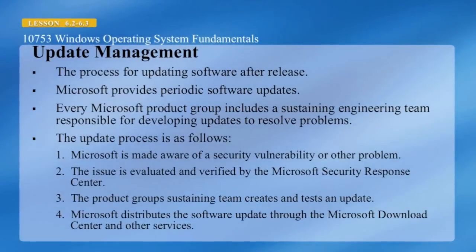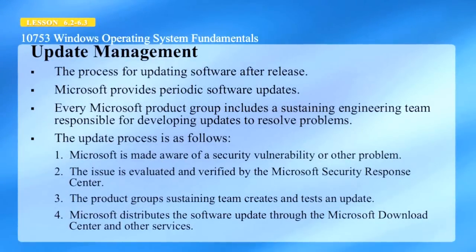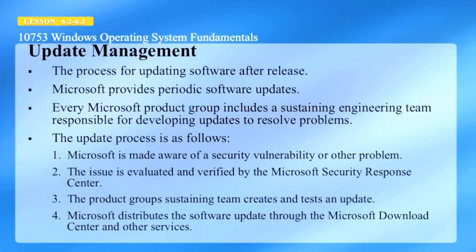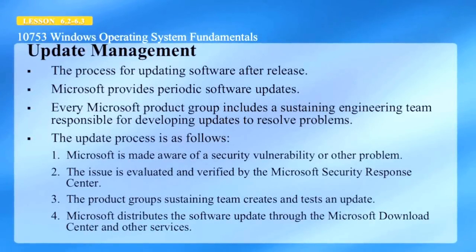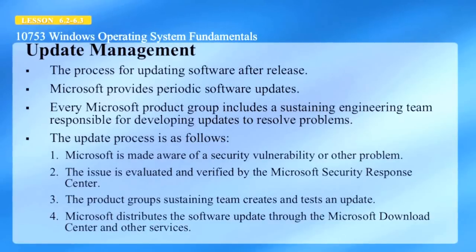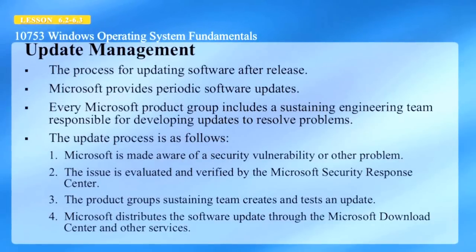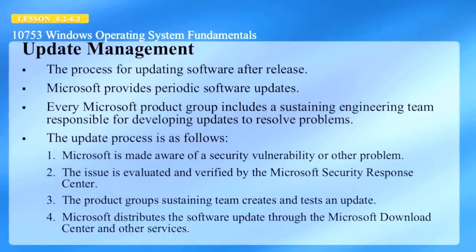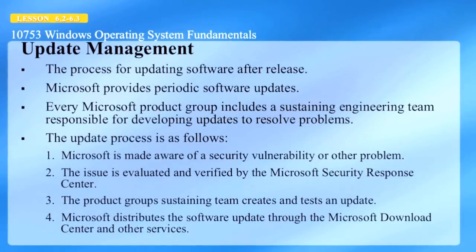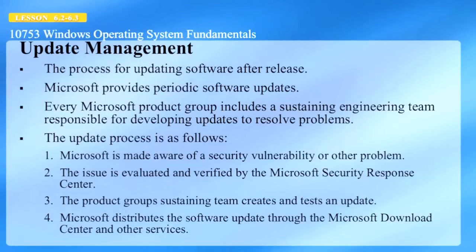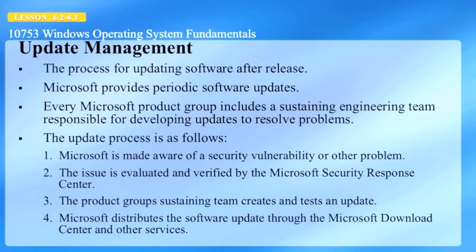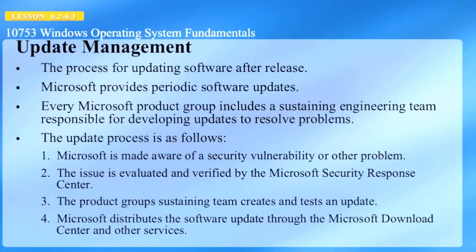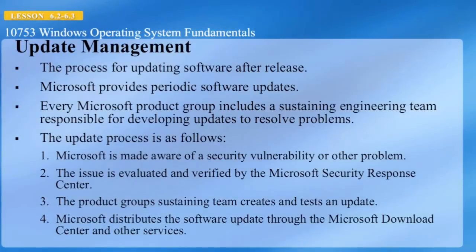Update management is the process for updating software after release, also known as patch management. Microsoft provides periodic software updates, and every Microsoft product group includes a sustaining engineering team responsible for developing updates to resolve problems. The update process is as follows: Microsoft is made aware of a security vulnerability or other problem, the issue is evaluated and verified by the Microsoft Security Response Center, the product group's sustaining team creates and tests an update, and then Microsoft distributes the software update through the Microsoft Download Center and other services.